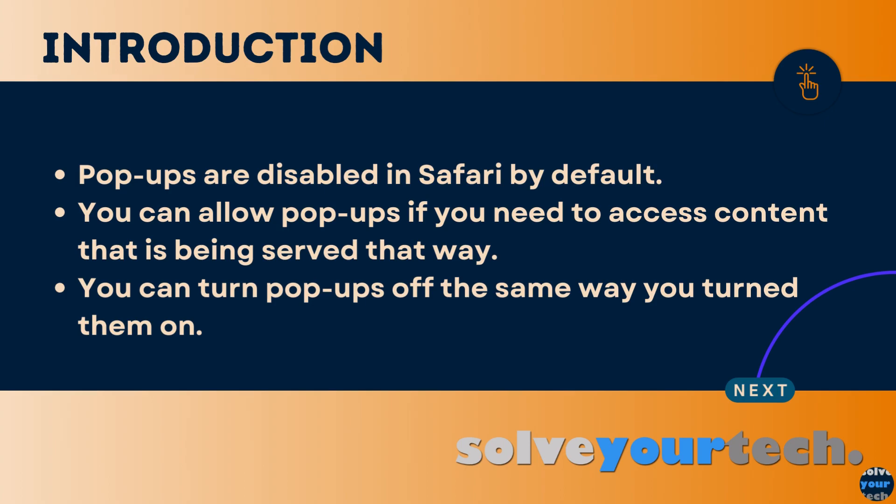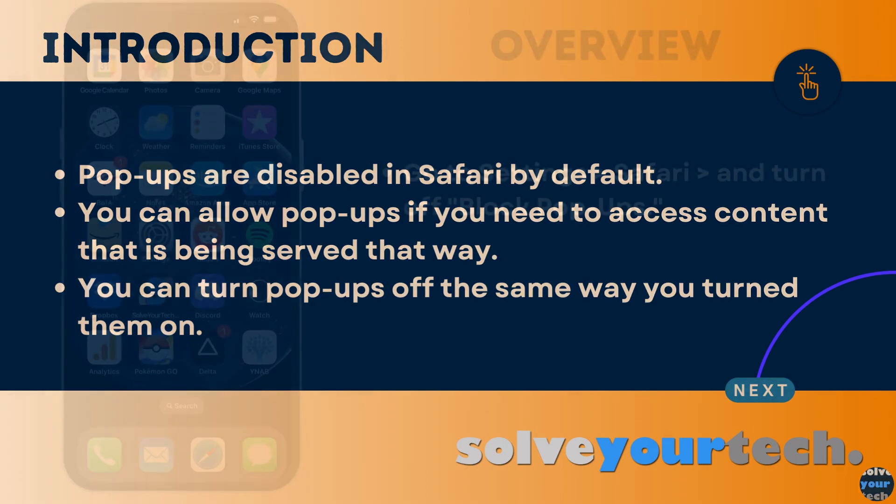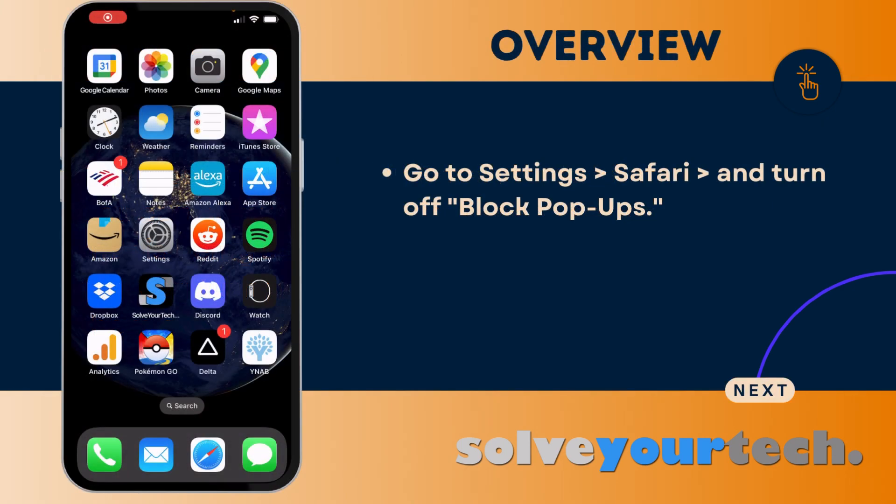Then, once you're done, you can simply return to the Safari menu in the Settings app and turn the pop-up blocker back on. Pop-ups are blocked on your iPhone by default, but you are able to change the pop-up blocker setting in Safari on your iPhone if you need to.